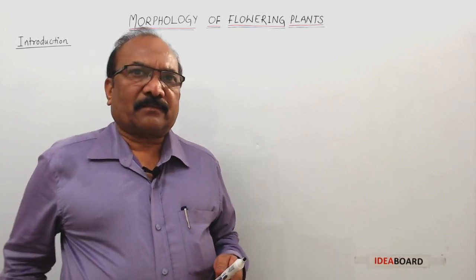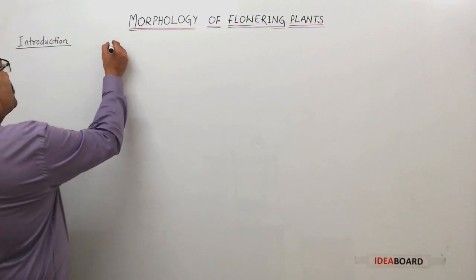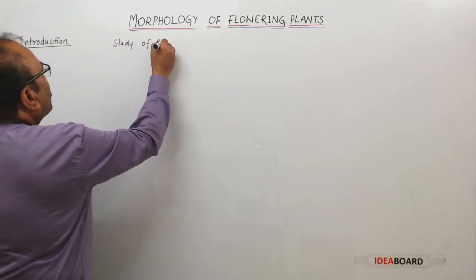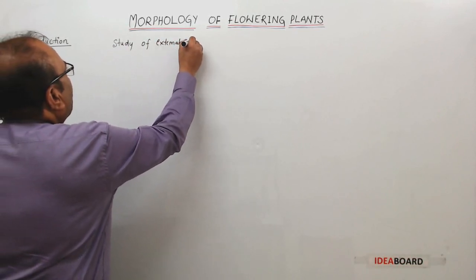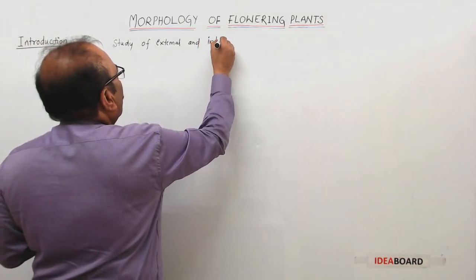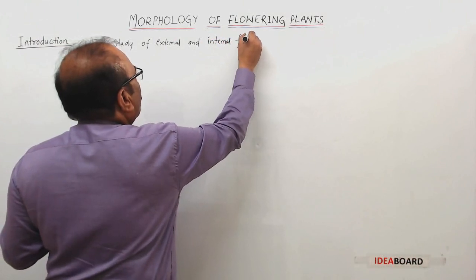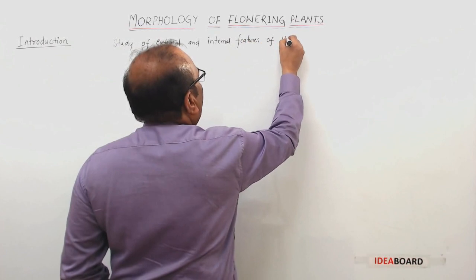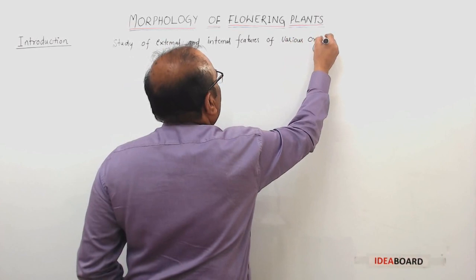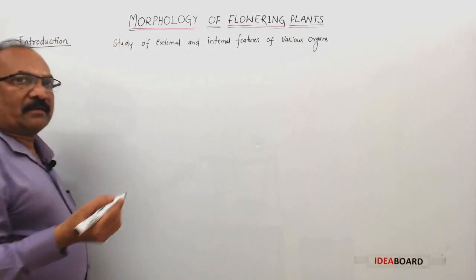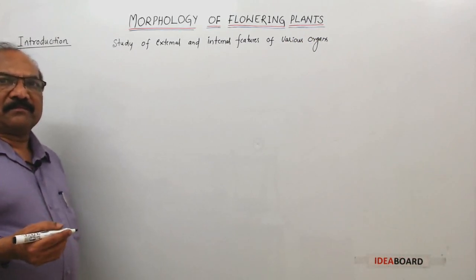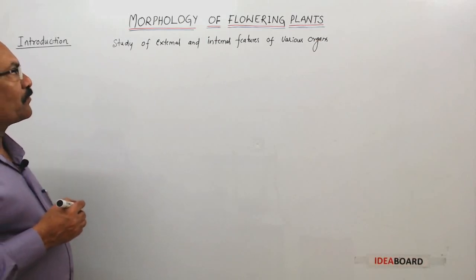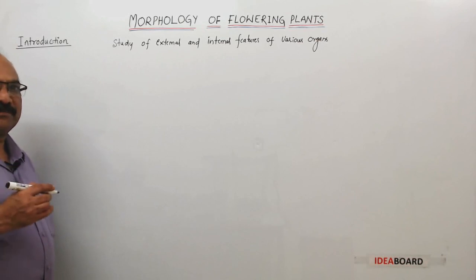What is morphology? Morphology is the study of external and internal features of various organs of organisms. This is a branch of biology. And if we are talking under botany, then it covers the various organs of plants. That is the definition of morphology.